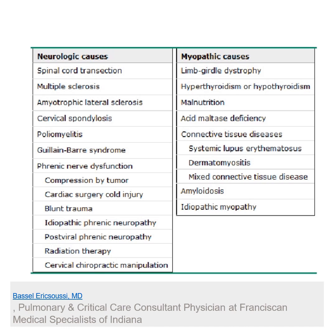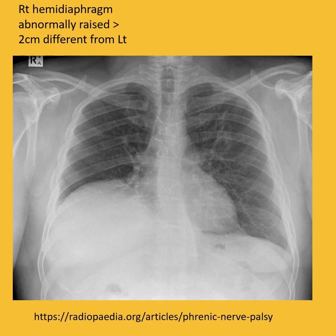Research suggests that approximately 70% of cases are idiopathic. If it's one-sided, the patient may not present with obvious symptoms. However, if both sides are paralyzed, the patient typically presents with respiratory arrest or severe dyspnea, requiring intubation. On chest X-ray, with unilateral diaphragmatic paralysis on the right side, the right diaphragm is normally slightly higher than the left, but the difference should not exceed two centimeters.